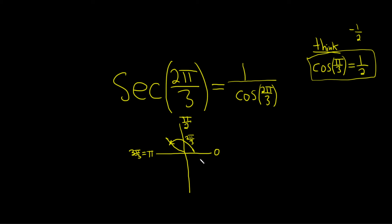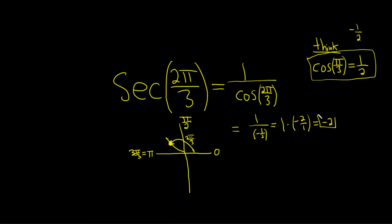You might say, how does that help us? Well, remember, on the unit circle, cosine is the x-coordinate. So here in quadrant 2, the x-coordinate is negative. So this is equal to 1 over negative 1 half because it's negative. And when you divide by negative 1 half, you really multiply by the reciprocal — so it's 1 times negative 2 over 1. So you just get negative 2.